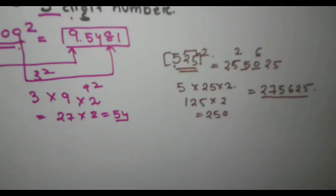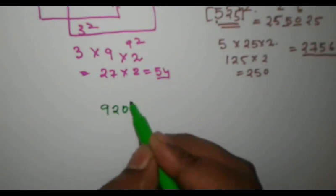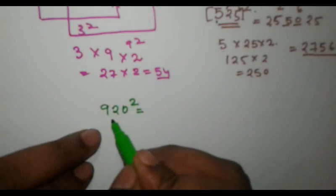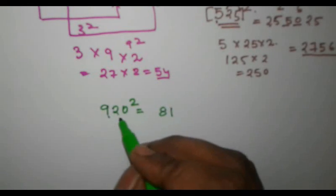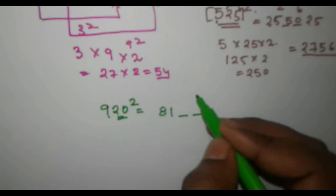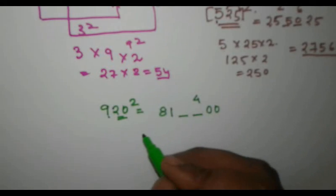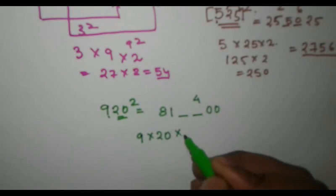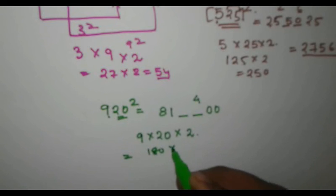Let me take one last example, which is 920 square. So first 9 square we have to find out is 81. We will write it over here. Then 20 square is 400. We will leave 2 spaces. We will write 4 at the top and double 0. Then we will write 9 into 20 into 2. So we will get 180 into 2 is equal to 360.